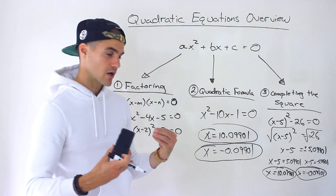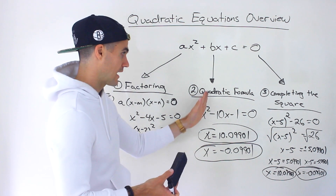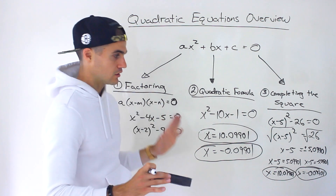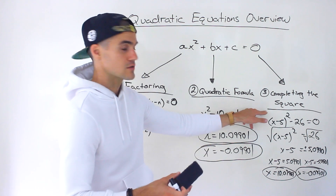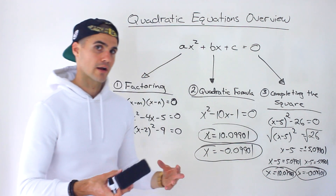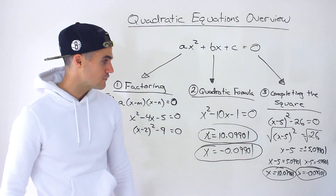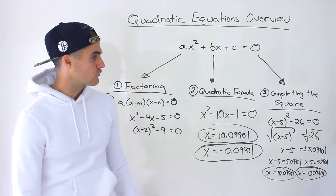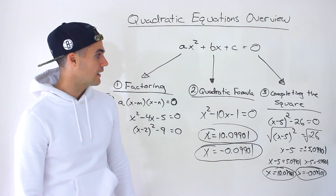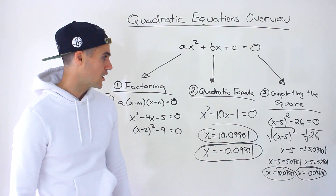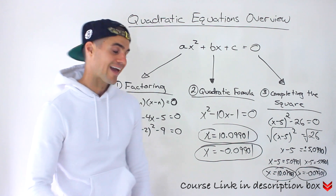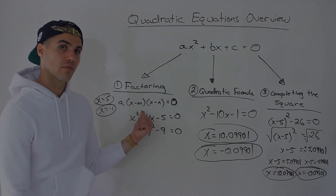Notice there was no extra tool we had to use — we didn't have to introduce some kind of formula. We were able to use all of the tools we've gone through so far, specifically the tool of completing the square. With this third method, you can technically solve any quadratic equation right now. The quadratic formula is a more popular method and we will be covering it in a separate section. So those are the three different methods to solve quadratic equations, and in the next couple of videos we're going to be focusing on the first method — factoring.